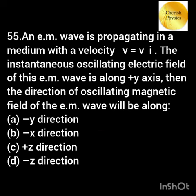An electromagnetic wave propagating with velocity Vî vector — the oscillating electric field is along the plus y-axis. The direction of the oscillating magnetic field is along?